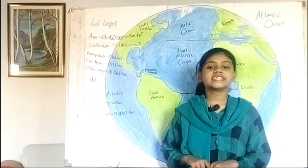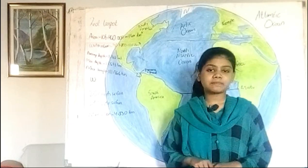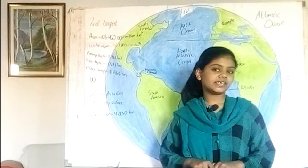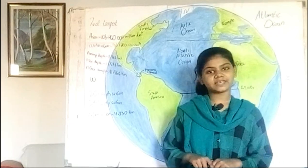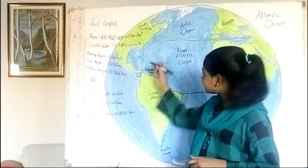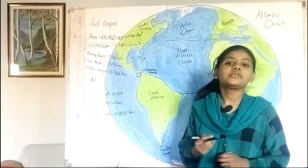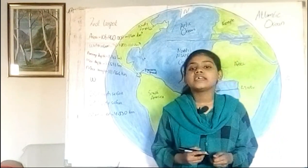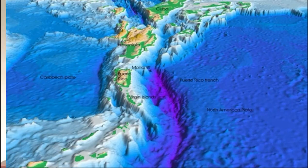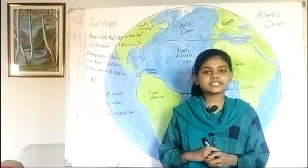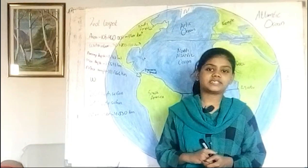The Puerto Rico Trench is the deepest part of the Atlantic Ocean and Caribbean Sea. The deepest part of the Puerto Rico Trench is just over 8,600 meters deep.